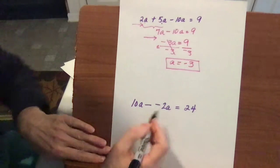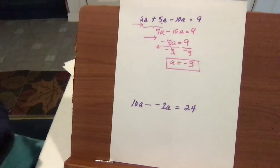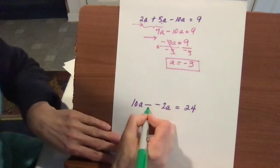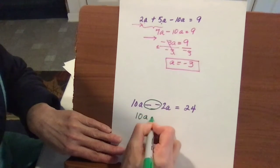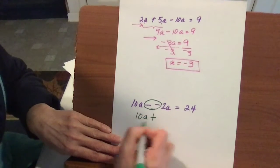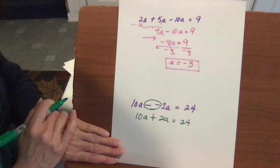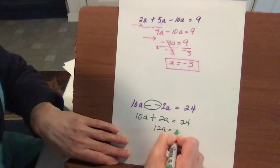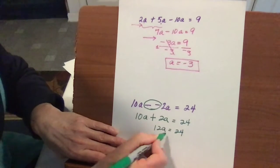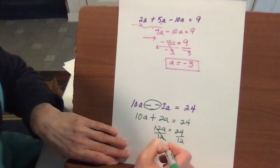Next up, you might sometimes see a double sign, which can get in the way. Anytime you see a double sign, just rewrite it — negative negative is like multiplying two negatives, so it's a plus sign, giving 2a equals 24. So 10a plus 2a is 12a equals 24. Divide by 12 on each side, and a equals 2. That is your answer.